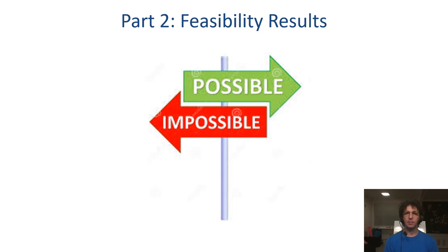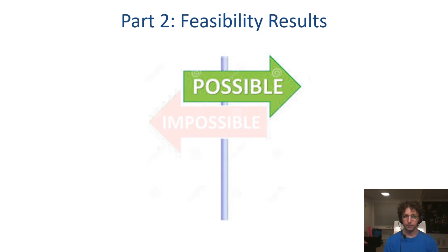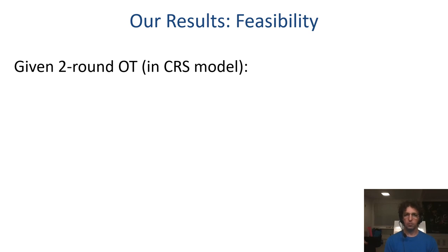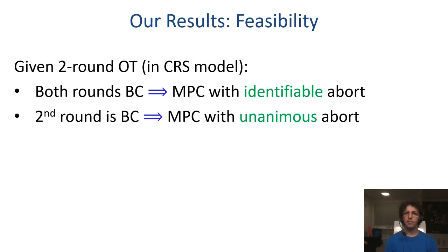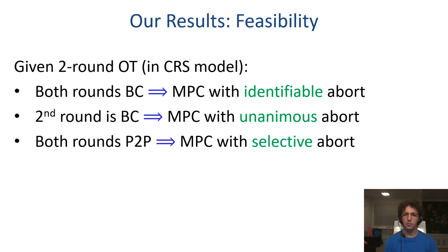The second part of the talk is about the feasibility results. Namely, we show that given a two-round oblivious transfer protocol in the CRS model: every function can be computed with identifiable abort by a protocol that communicates over broadcast in both rounds; every function can be computed with unanimous abort by a protocol that communicates over point-to-point in the first round and broadcast in the second; and every function can be computed with selective abort without using broadcast by a two-round protocol over point-to-point channels.